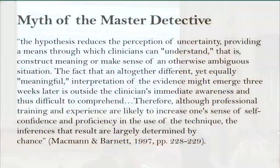This comes from Macman and Burnett, 1997 — a great article. The idea is we're not thinking about this stuff when we're interpreting these profiles. They said we could come up with hypotheses — we're really good at spinning a yarn. But these hypotheses, although they reduce the perception of uncertainty and help keep us sane, give us a mechanism for perceiving we understand a kid's problem. When we're making these hypotheses, we're not aware that if we tested a kid three weeks later, we might get a completely different set of scores, and thus a completely different set of hypotheses.